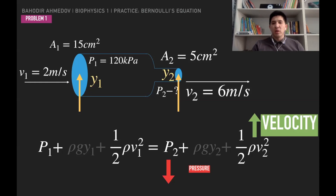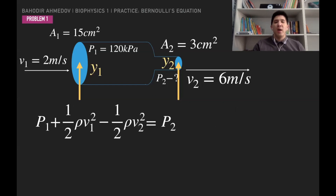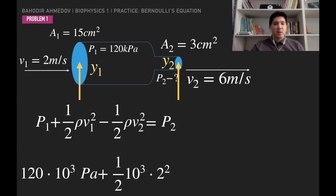To find the pressure numerically, we rearrange Bernoulli's equation algebraically, bringing v2 to the left-hand side. The pressure P2 can be found using: P2 = P1 + ½ρv1² − ½ρv2². The pressure at the first point is 120 kPa, which is 120 × 10³ Pa. The density ρ of water is 1000 kg/m³.